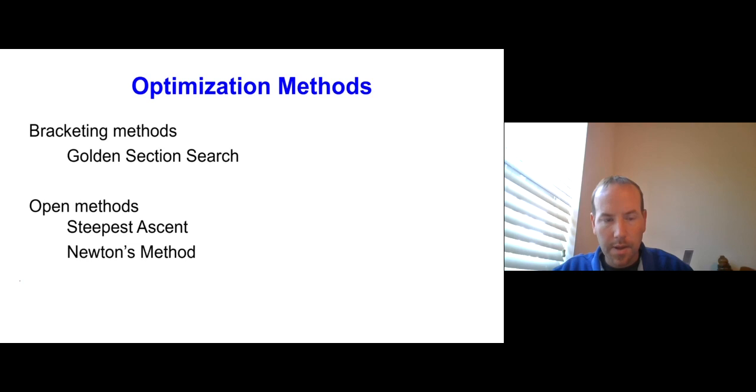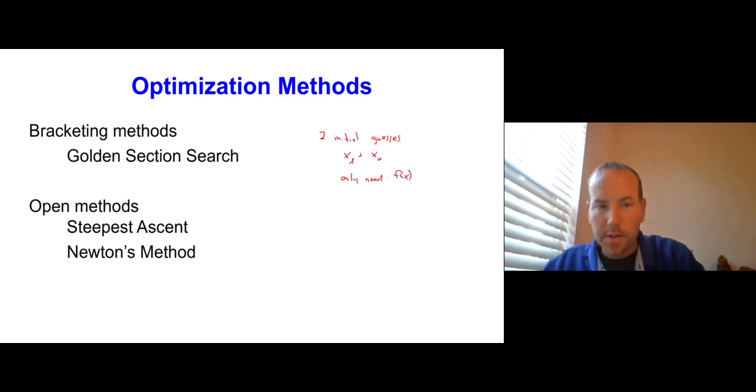Now we're going to start looking at what methods we use for optimization. Analogous to what we had done with root finding, there are bracketing methods. We'll start with two initial guesses, XL and XU. They only need to be able to evaluate our function. They don't need to be able to evaluate derivatives of our function. This is going to sound a lot like a bisection method. But in this case, we're finding a maxima. This is called the golden section search method.